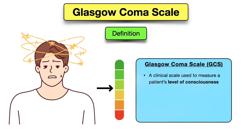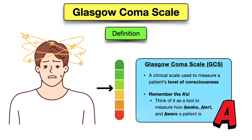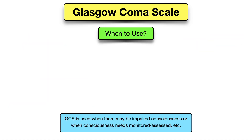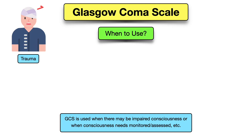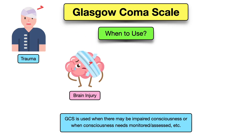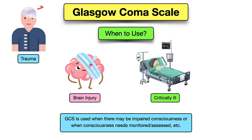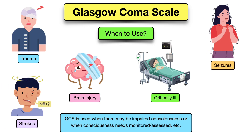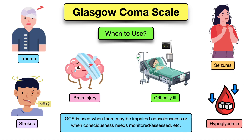So what is the Glasgow Coma Scale? The Glasgow Coma Scale, or GCS for short, is a clinical scale that measures a patient's level of consciousness. Think of it as a tool to measure how awake, alert, and aware a patient is. The GCS score is typically used in trauma patients or when there's concern for brain injury. It can also be used for critically ill patients during acute medical situations where consciousness is impaired — this could be seizures, strokes, or low blood sugar, to name a few.